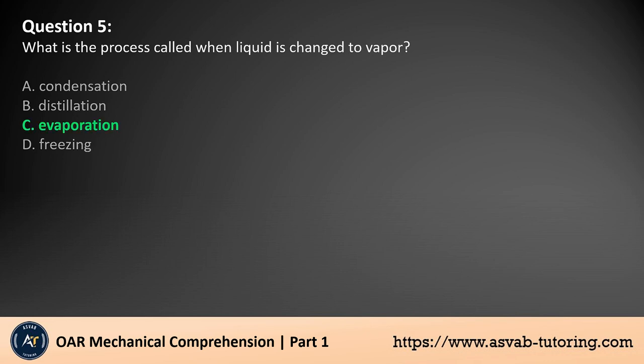The answer is C. Evaporation is the process by which a liquid is transformed into a vapor. This occurs when molecules at the surface of the liquid gain enough energy to break free from the liquid surface and enter the gas phase. Evaporation is a natural process that happens at temperatures below the boiling point and is responsible for phenomena like drying wet surfaces and the water cycle in nature.